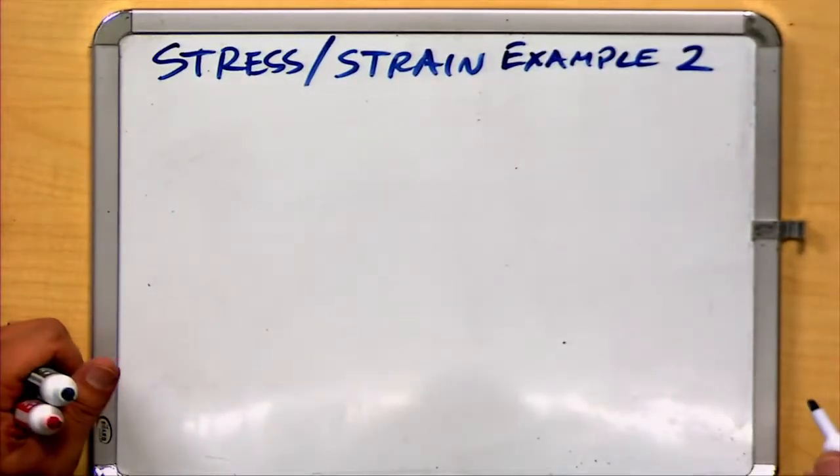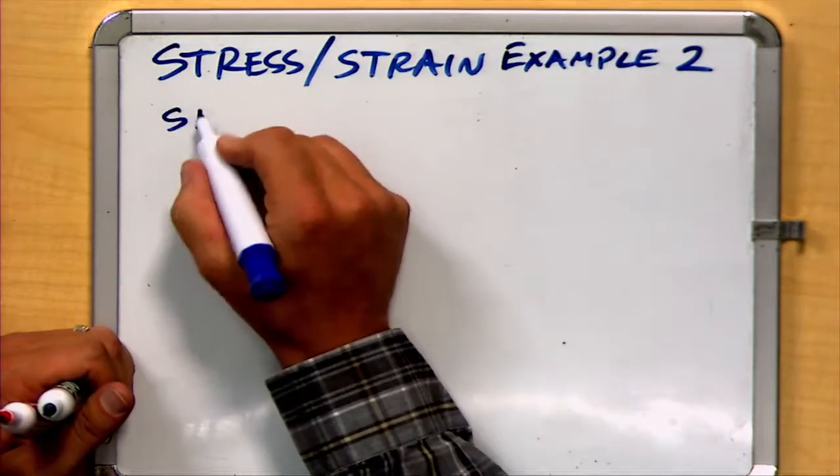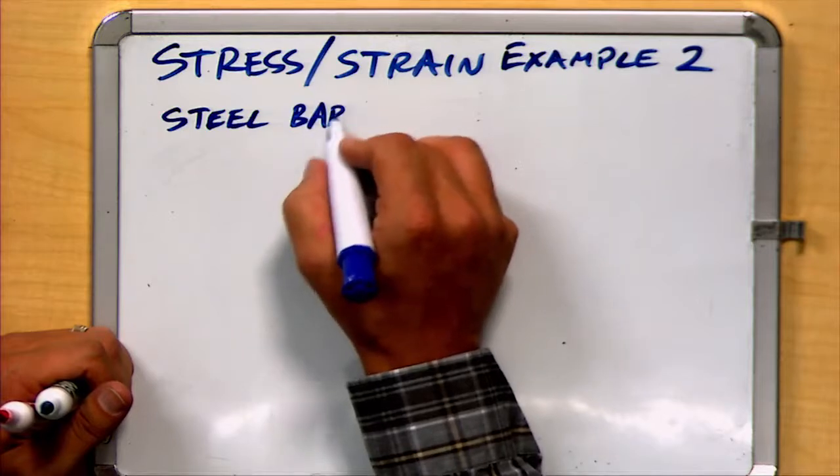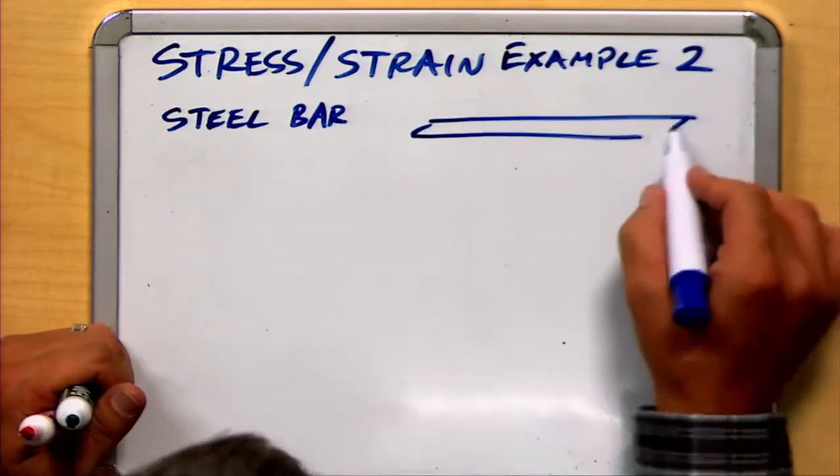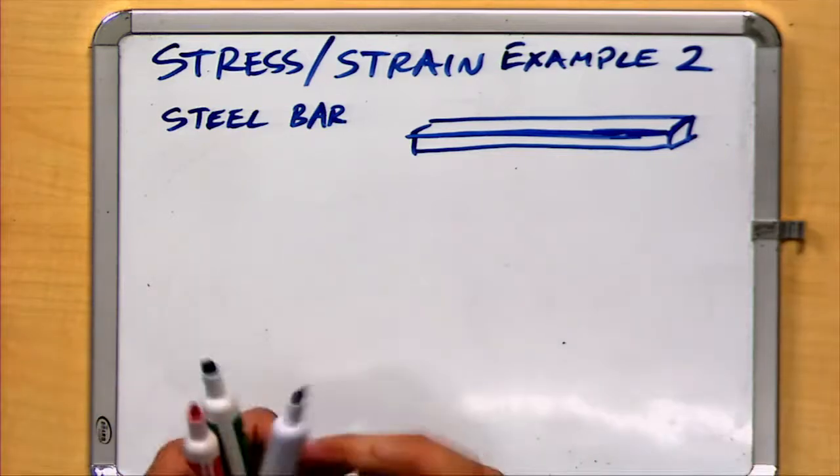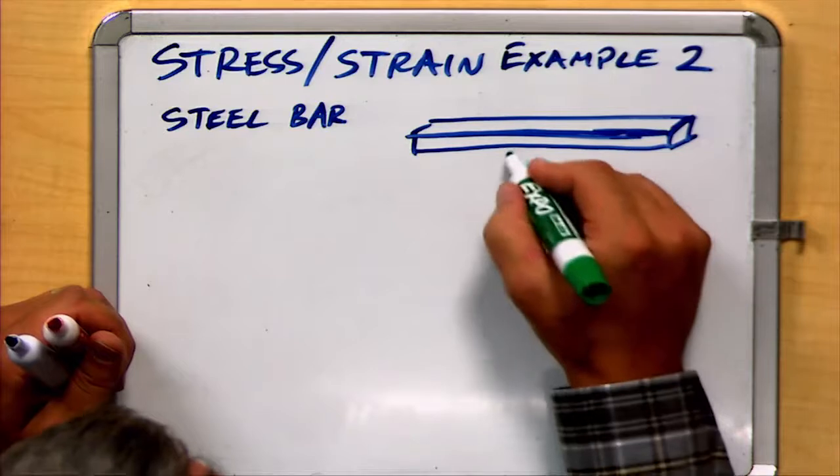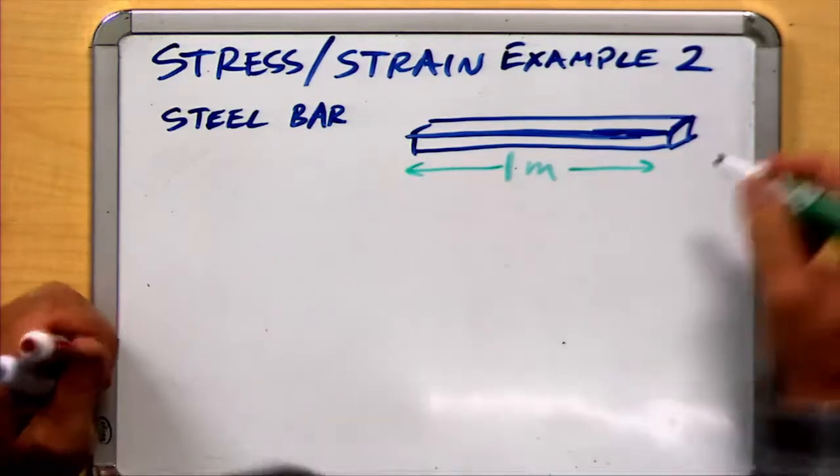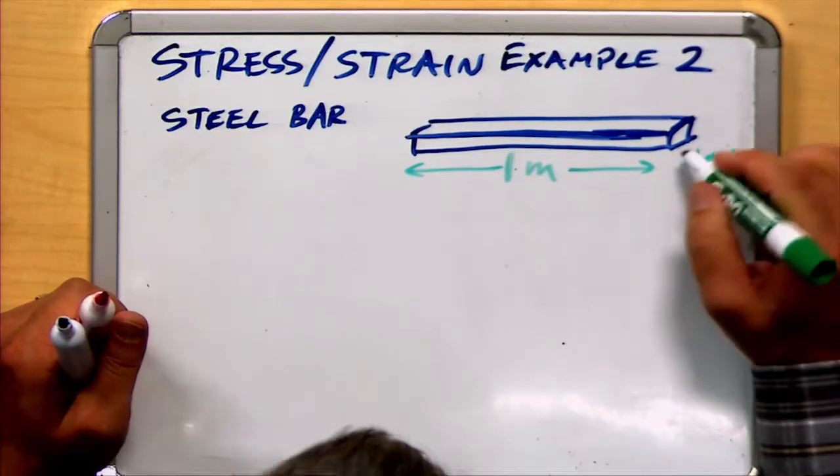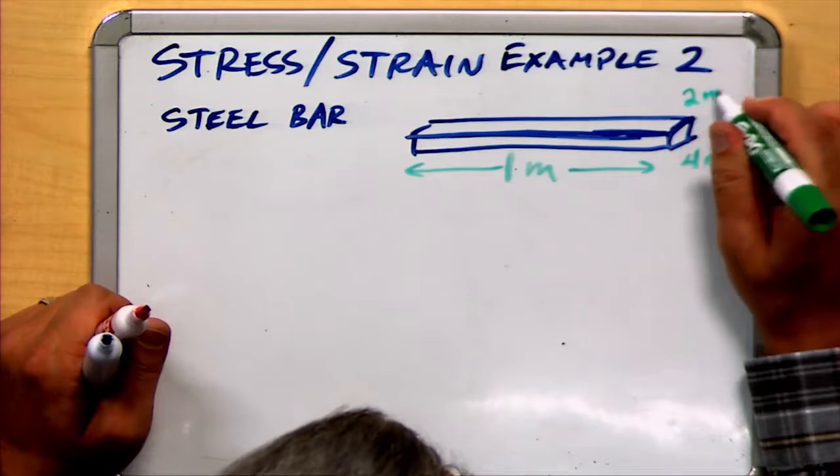Let's consider a second stress and strain example. In this case, we have a bar that's made of steel. We know the dimensions of the bar. It's only 1 meter long. It has a depth of 4 millimeters and a height of 2 millimeters.